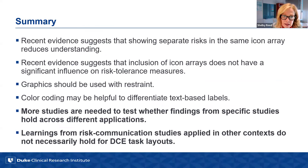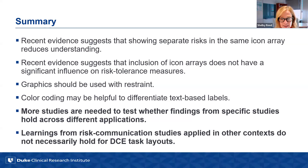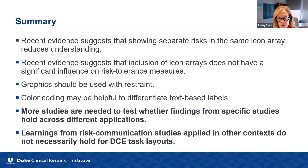Yorian has also done work comparing a version of a survey that included words versus graphics to represent different attribute levels shown across choice questions, around vaccine effectiveness. It found that people generally preferred the words rather than the graphics — word versions resulted in higher choice consistency and showed more valid attribute level estimates, finding that graphics really didn't improve people's understanding of the attribute levels. In summary: showing separate risks in the same icon array in integrated fashion reduces understanding. Recent evidence suggests icon arrays do not have a significant influence on risk tolerance measures. Graphics should be used with restraint, potentially along with words, and color coding may be helpful to differentiate text-based labels.